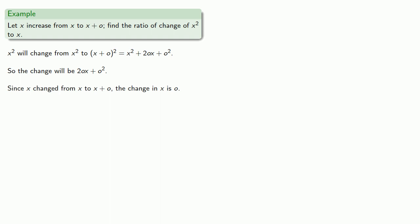And so the ratio of change is 2ox plus o squared over o, or 2x plus o. And so this is the ratio of the change in x squared to the change in x.